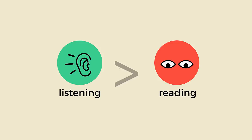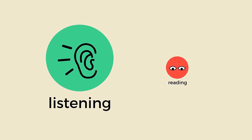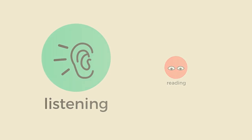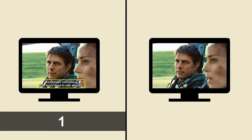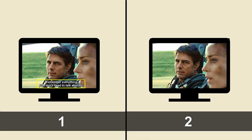Listening is much more difficult than reading. So when you learn English, you should do more listening than reading. This is why some people watch movies twice. They watch a movie with subtitles first, then they watch the same movie again without the subtitles to practice listening. This is an effective way to improve your listening, but I think it's really boring to watch movies twice.